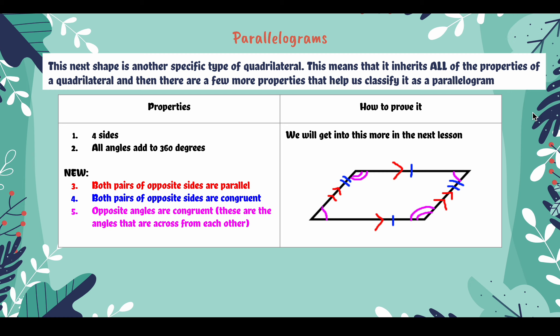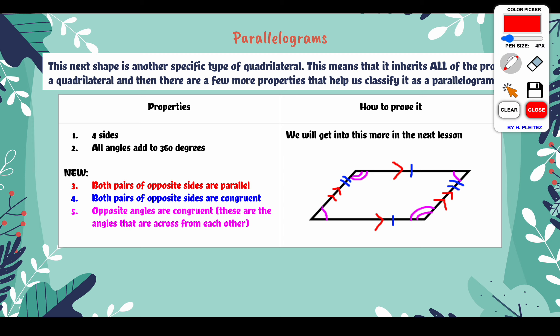Since it's another type of quadrilateral, we know we're inheriting all of the properties of that quadrilateral. You don't have to write these out — what you can write instead is 'all quadrilateral properties.' The reason I say this is because it forces you to go study. You should know the quadrilateral properties like the back of your hand, because as we get into more complex examples it's only going to get harder.